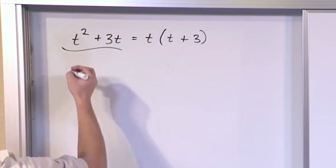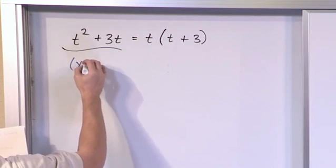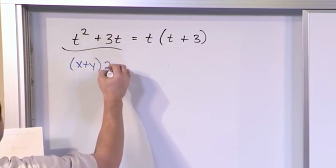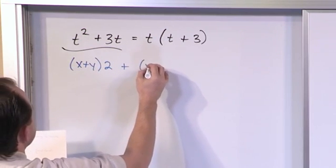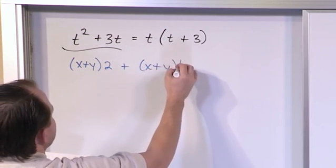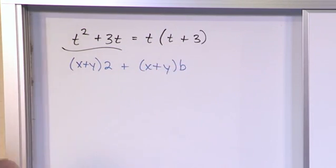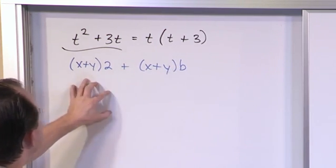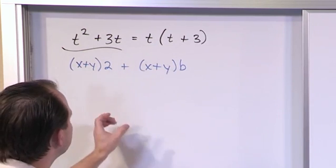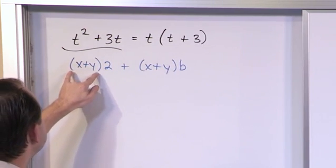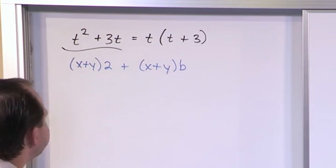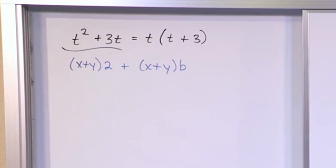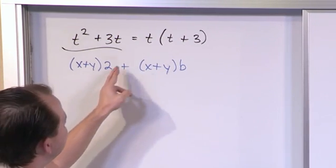Now let me give you another problem that you haven't quite seen before. What if you have (x+y) times 2 plus (x+y) times b. Now this looks a whole lot different because I have a very large expression and then on each one of these terms I have something in parentheses here and something in parentheses here. So at first I don't know what I can pull out because I have a 2 and a b.